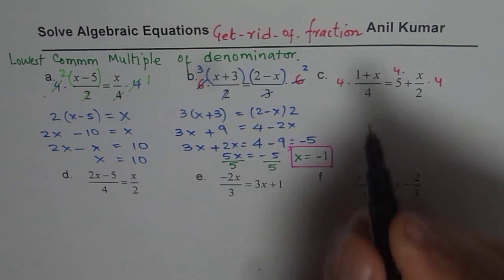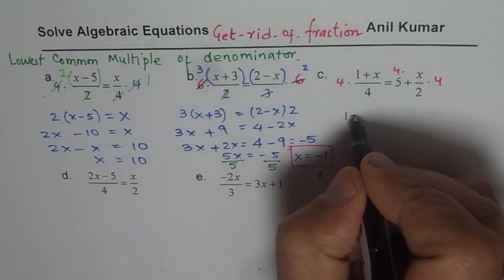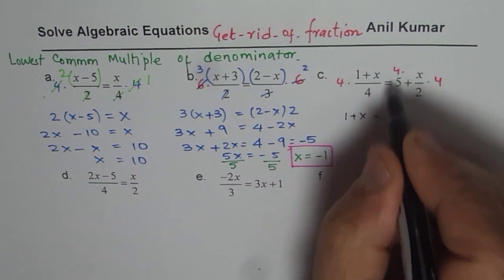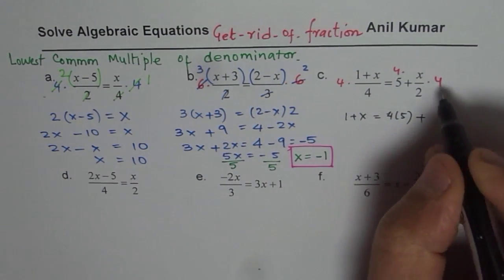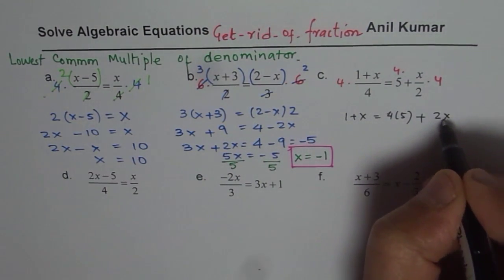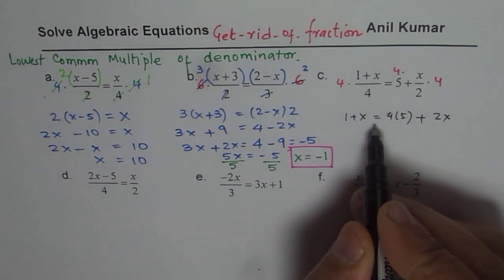In this case, 1 plus x equals to 4 times 5 is 20. Right? So let me write 4 times 5 plus 2 times x. This is what we get. Now we can bring the x's together.